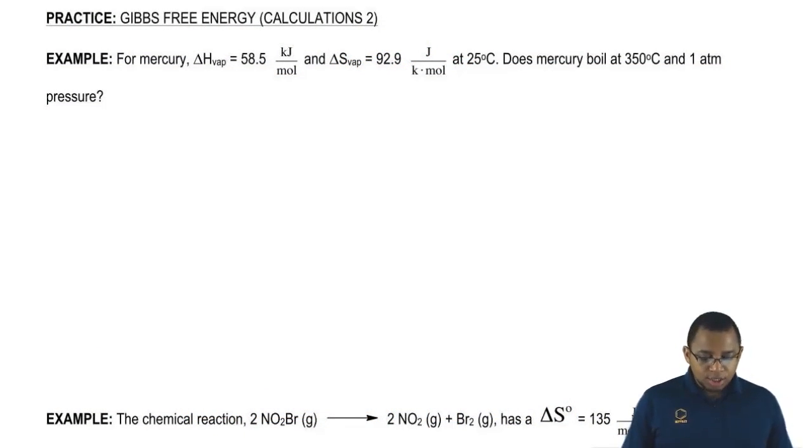the enthalpy of vaporization equals 58.5 kilojoules per mole and the entropy of vaporization equals 92.9 joules over kelvins times moles at 25 degrees Celsius. Now, I'm asking you, does mercury boil at 350 degrees Celsius and 1 atmosphere pressure?